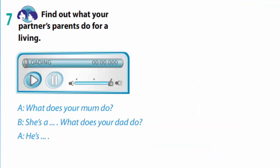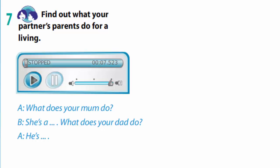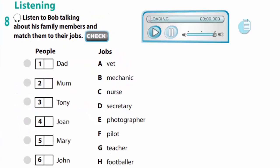In exercise 7 you are to find out what your partner's parents do for a living. Listen to the example: 'What does your mum do?' 'She's a teacher.' 'What does your dad do?' 'He's a vet.' In exercise 8, listen to Bob talking about his family members and match them to their jobs.